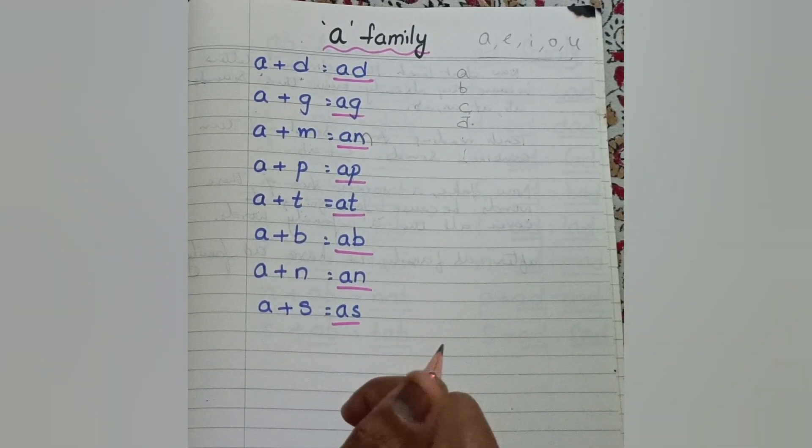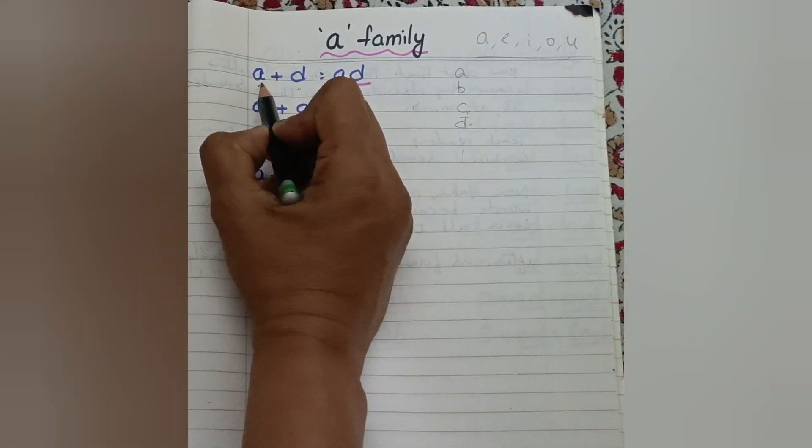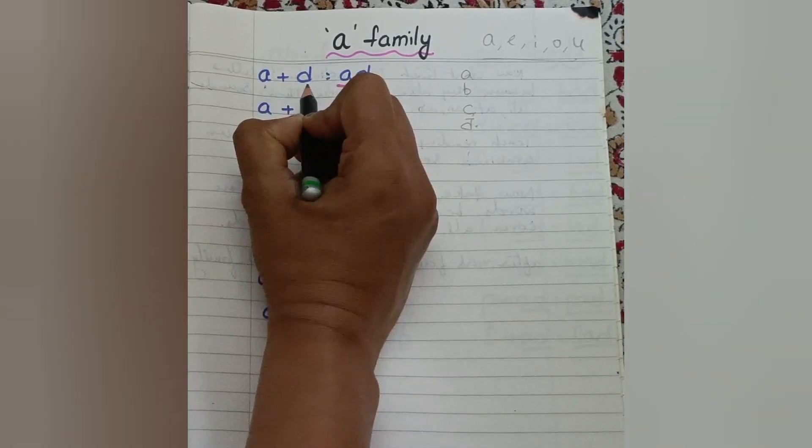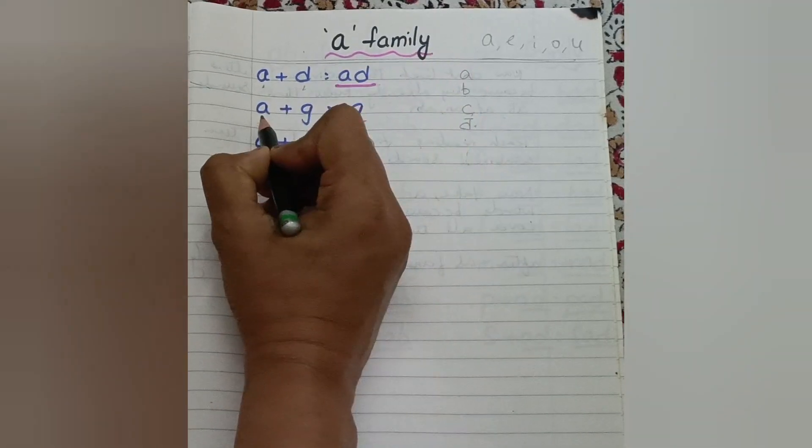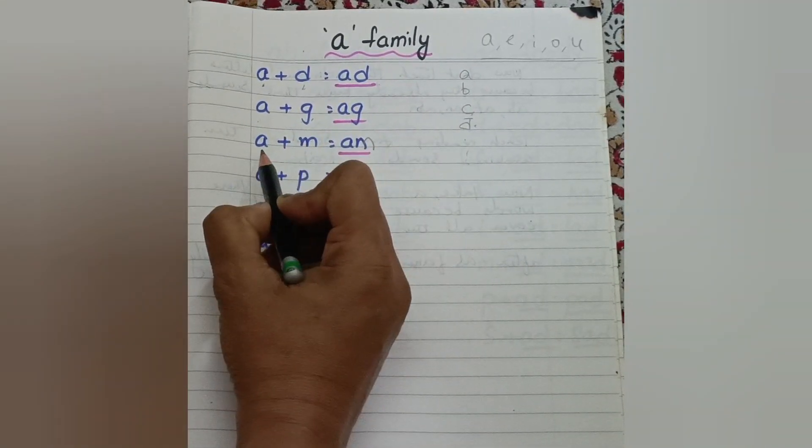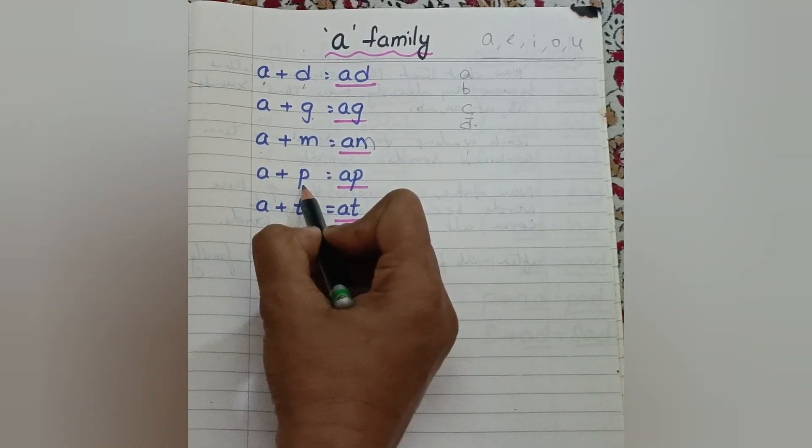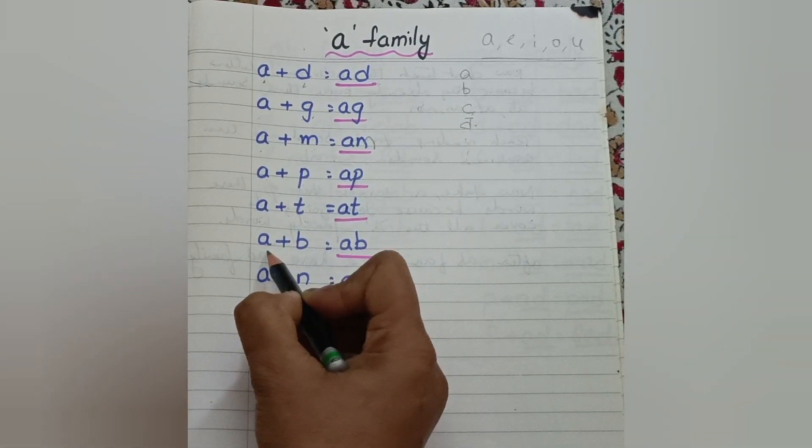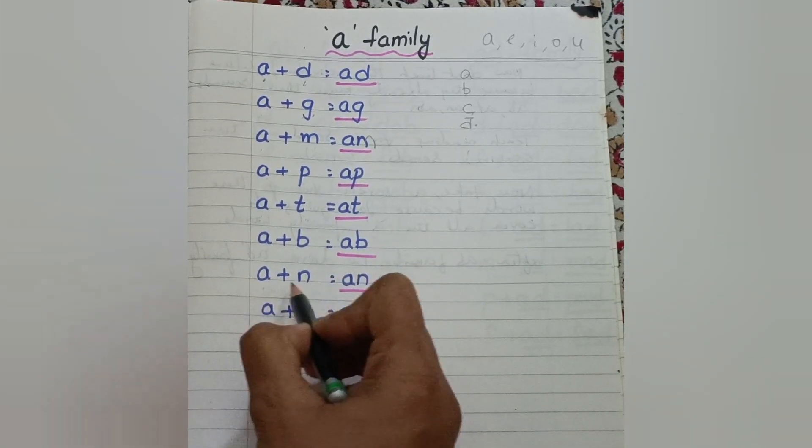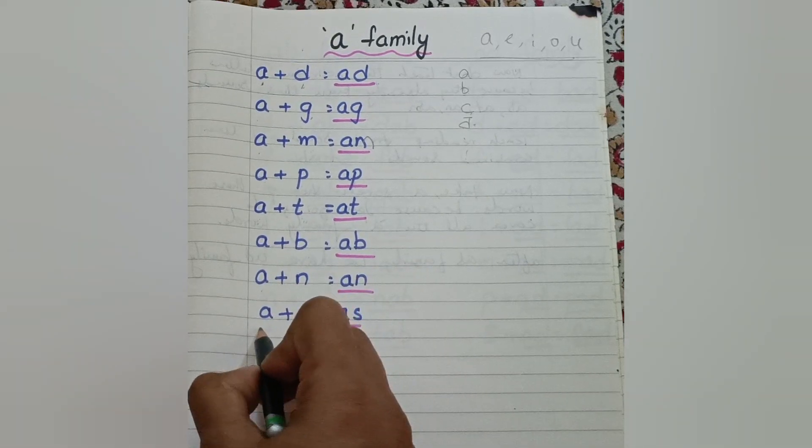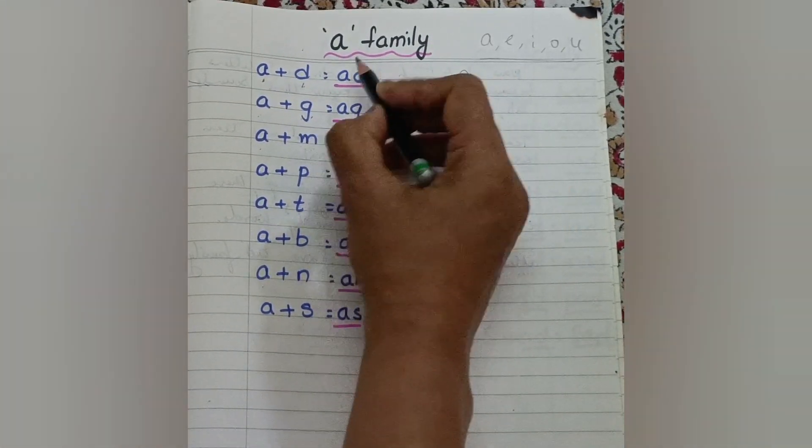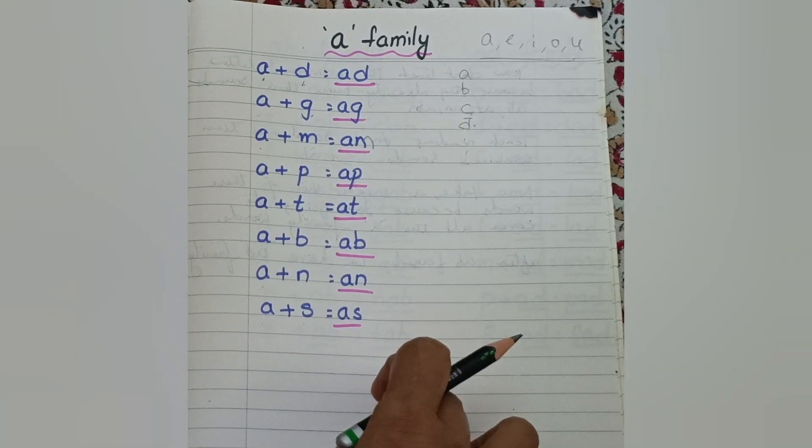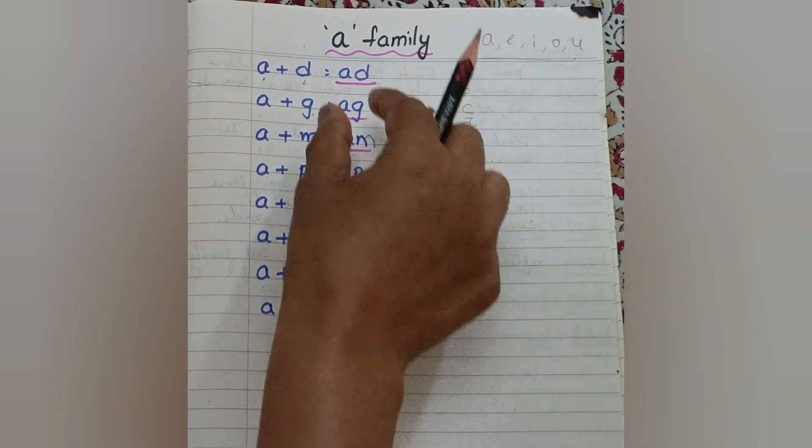For reading two-letter words or three-letter words blending, the child should know the letter sounds. So let's see how to teach or how kids read. Firstly, you need to say the individual sounds then blend. Individual sounds: Ad. A, D, Ad. A, G, Ag. A, M, Am. A, P, Ap. A, T, At. A, B, Ab. A, N, An. A, S, As. So these are the two-letter word blendings. I suggest first two to three days you can practice these letters and two-letter word blending.